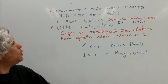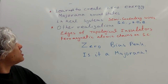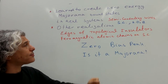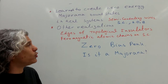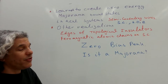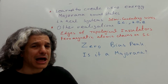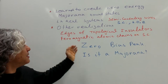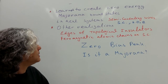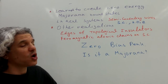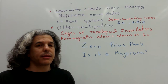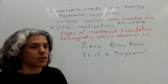We have learned how to create zero energy Majorana bound states in real systems. We mainly discussed semiconductors in proximity to a superconductor with spin-orbit coupling and with a magnetic field. There are other suggestions and realizations — for example, ferromagnetic atomic chains on superconductors, which was realized recently, and also the suggestion to use edges of topological insulators in proximity to a superconductor. You will learn about that later in the course.